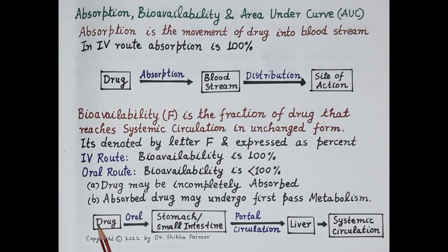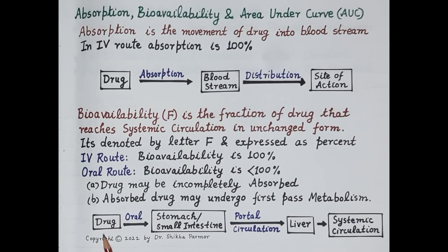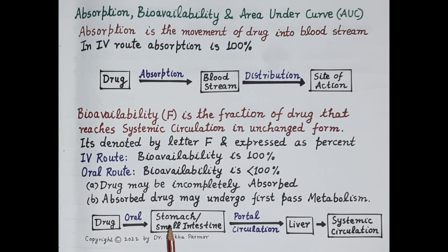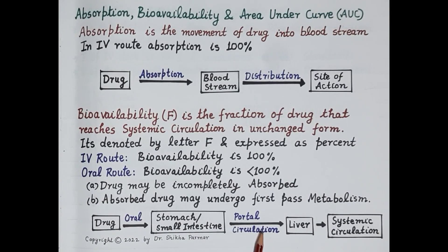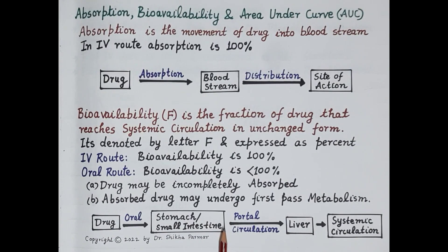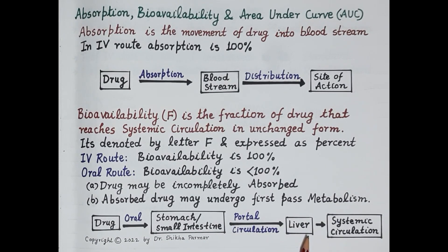Let's understand bioavailability using the example of the oral route. Our drug is aspirin. Looking at this figure, aspirin is administered orally and reaches the stomach. The wall of the stomach is made up of phospholipids, so aspirin has to pass across the wall of the stomach to reach the portal circulation. This wall is the first barrier to absorption, and the drug may be incompletely absorbed into the portal circulation. Once absorbed, the portal circulation carries the drug to the liver.